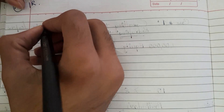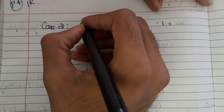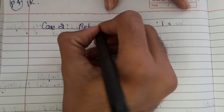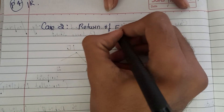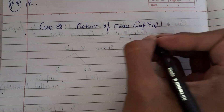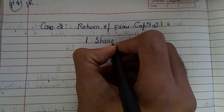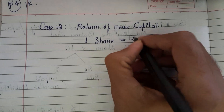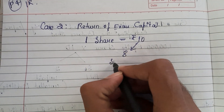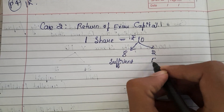See the book. This is Case 2. Case 2 is the return of excess capital. What is this excess capital? Let me think that I have issued each share for rupees 10 each. I think that only 8 rupees is sufficient and the remaining 2 rupees I may feel that it is in excess.